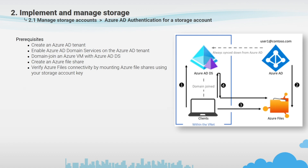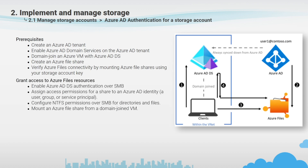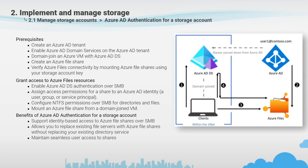After completing the prerequisites, the workflow requires: enabling Azure AD authentication over SMB on the storage account, assigning access permissions for the group or users that will access the share, configuring NTFS permissions, and finally mounting the share on the client station. It is important that only one domain service can be used for file access authentication on a storage account, which applies to all file shares in the account. Benefits of Azure AD authentication include replacing existing file servers without replacing your directory service and assigning a new permission schema.